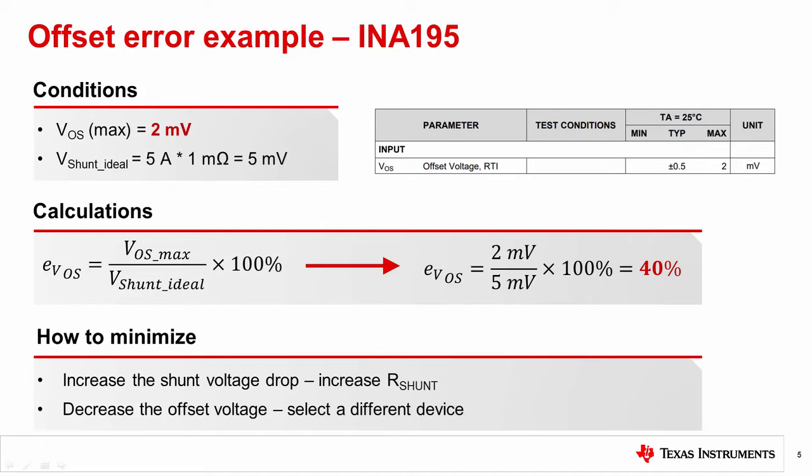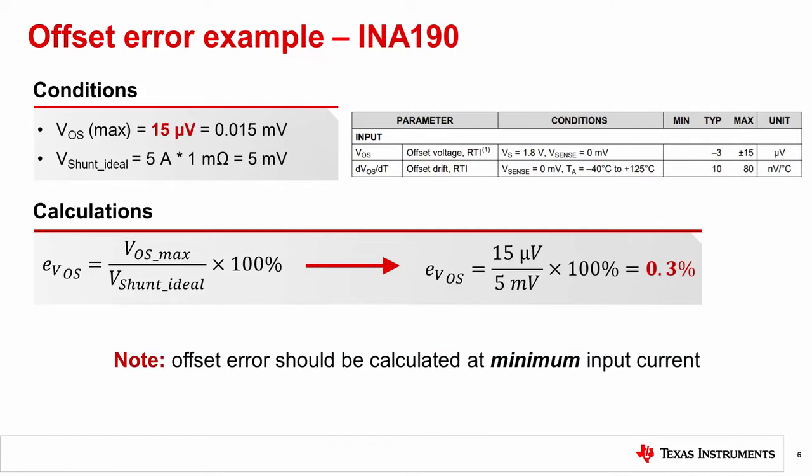Let's consider option two, selecting a different device with a lower VOS. Now we will consider the INA190, which has a max VOS of only 15 microvolts, or 0.015 millivolts. The application conditions for load current and shunt resistance are the same as before. Recalculating offset error gives a new result of only 0.3%. As you can see, the INA190 is a much better choice for this application.